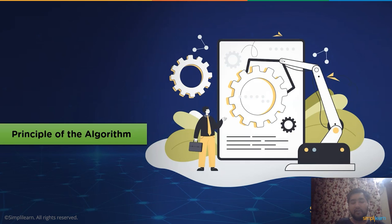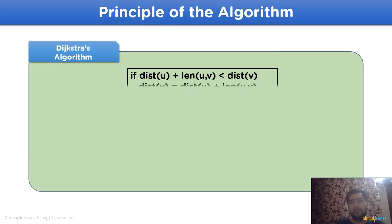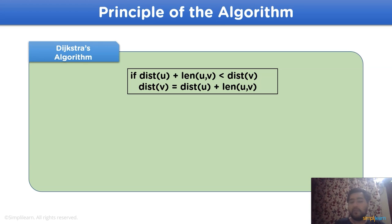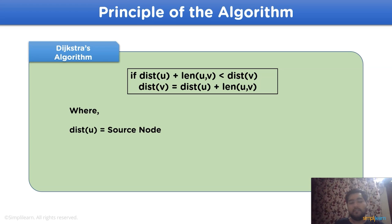To practically understand the functioning of Dijkstra's algorithm, let's take a look at the principle. The principle works as follows: if the distance of u, representing the current node, plus the length — the attribute value between node u and node v, the target node — is less than the distance of the target node, then the distance of the target node equals the distance of the current node plus the length between the target node and the current node. Here, distance u represents the source or current node, and distance v represents the target or destination node.